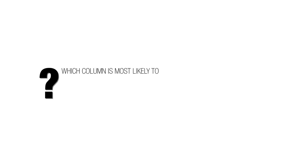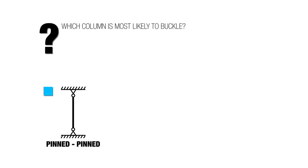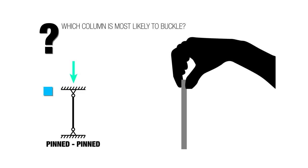Which column is most likely to buckle? A pin connection on both ends, and this little signal here means it's a pin connection, so you can picture it like a rod being held between your fingers. That's a pin connection.